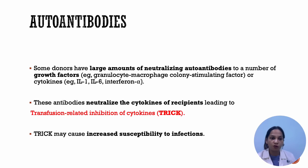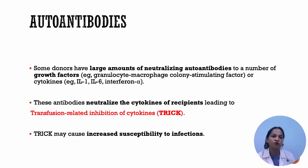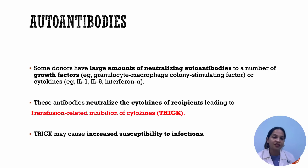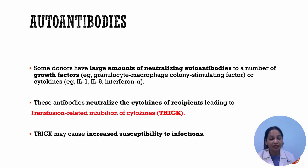Autoantibodies also have a role in TRIM. Some healthy donors have large amounts of neutralizing autoantibodies to a number of growth factors like granulocyte macrophage colony stimulating factor or against cytokines. When these autoantibodies are transmitted, they can neutralize the cytokines in the recipient, leading to transfusion related inhibition of cytokines or TRIP, making the patient more susceptible to infections.